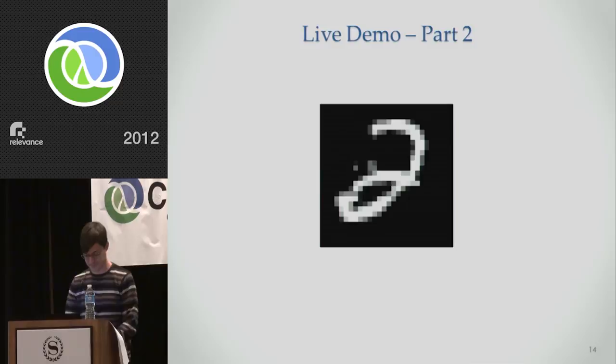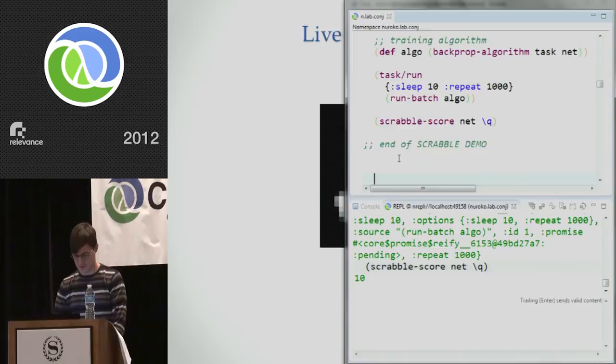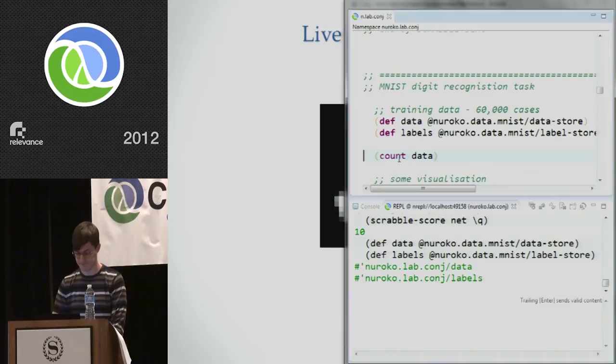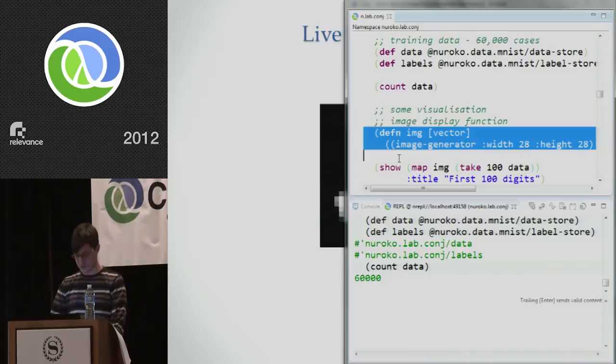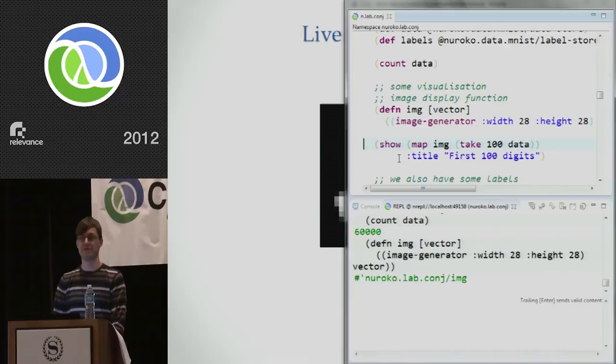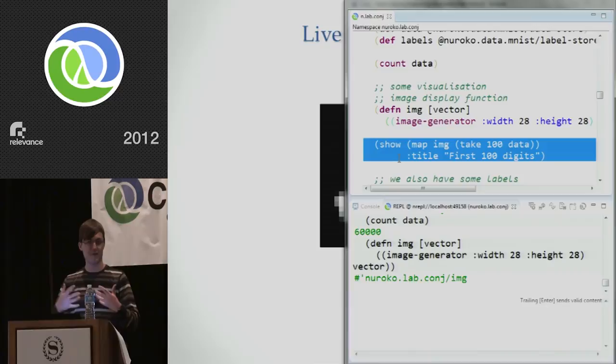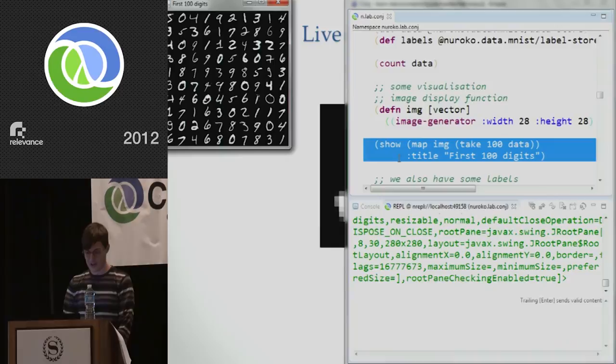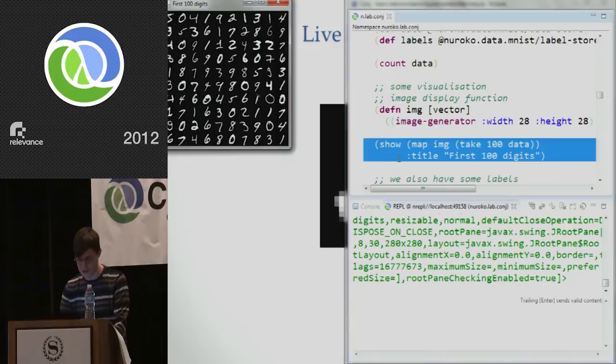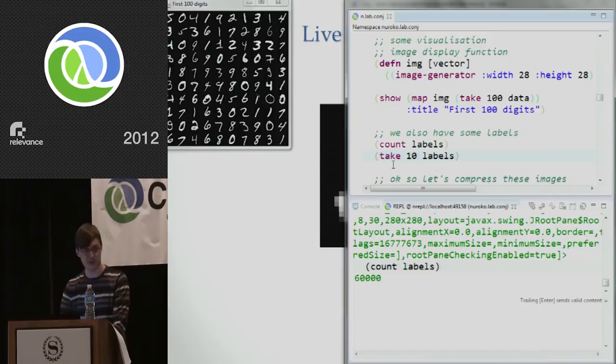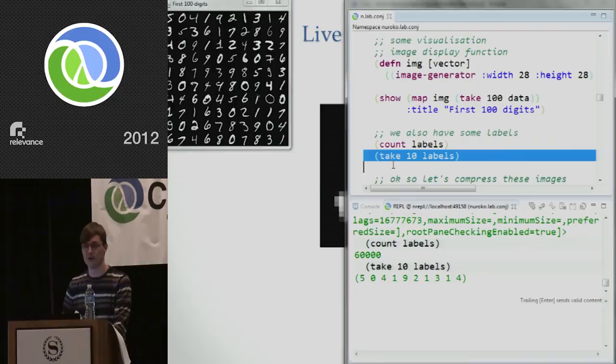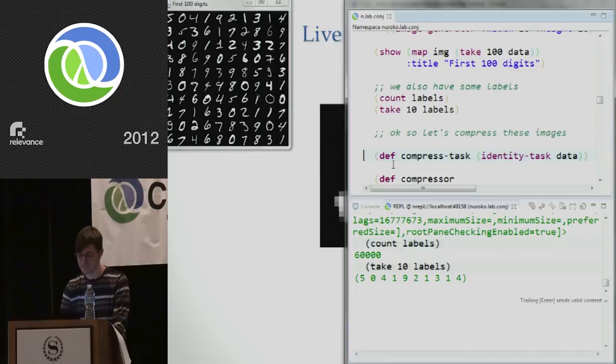So let's give this a quick try. So we'll start off just getting some of our data. We actually have 60,000 training examples here which we're going to use. And it's quite useful to be able to visualize these things. So I'm just going to define an image creation function, and I'm just going to map that over the first 100 data items. And this is the advantage of having a dynamic REPL environment. You can just do these quick visualizations. So that's the first 100 digits. You can see they're all handwritten, quite a bit of noise in them. And that's what we're going to train this thing to recognize. We also have the labels, and the labels are the correct digits that we're expecting to recognize. We've got 60,000 of them. Take the first 10. That should be the same as the first line of those digits up there.